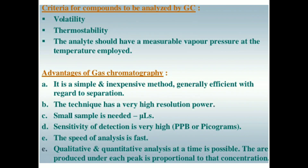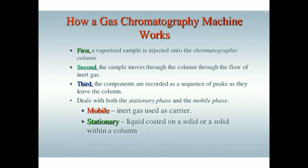How a gas chromatography machine works: first, a vaporized sample is injected onto the chromatography column; second, the sample moves through the column; third, the components are recorded as a sequence of peaks as they leave the column. The technique deals with both the stationary phase and the mobile phase — the mobile phase is an inert gas used as a carrier, and the stationary phase is a liquid coated on a solid or a solid within a column.